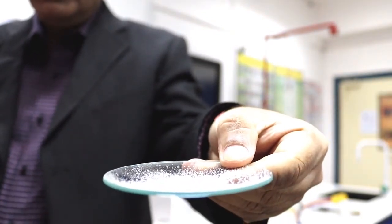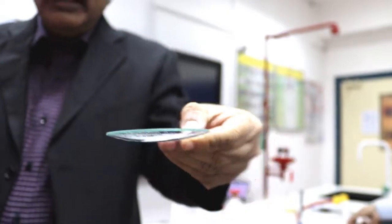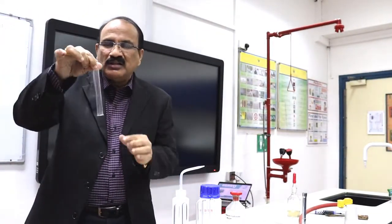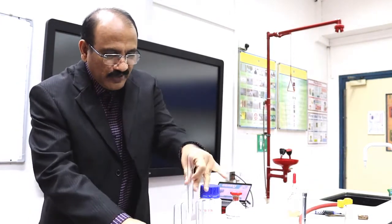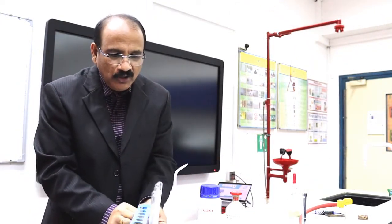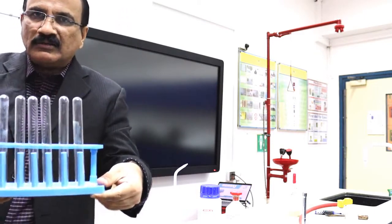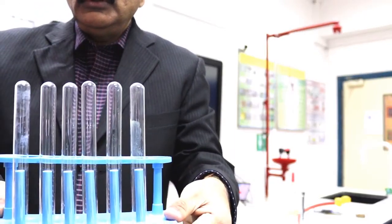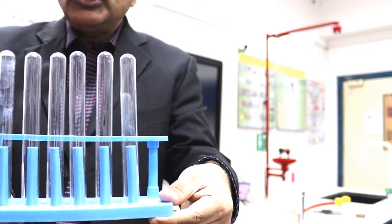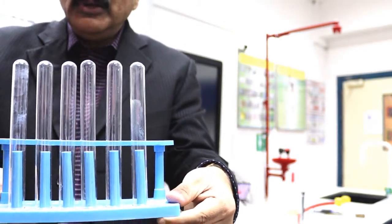So first test is, take a little bit of salt in a dry test tube. Please ensure that the test tube is dry. Whenever you are doing the practical, please ensure that you are keeping all the test tubes in this manner. After washing, you have to keep the test tube in the inverted manner so it will always be dry.